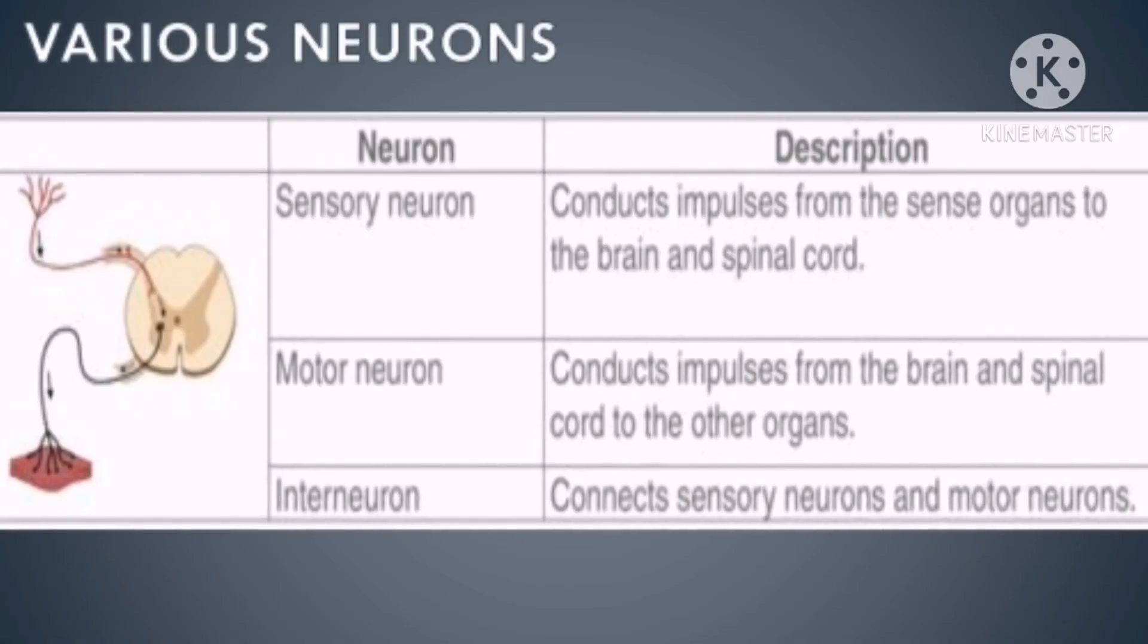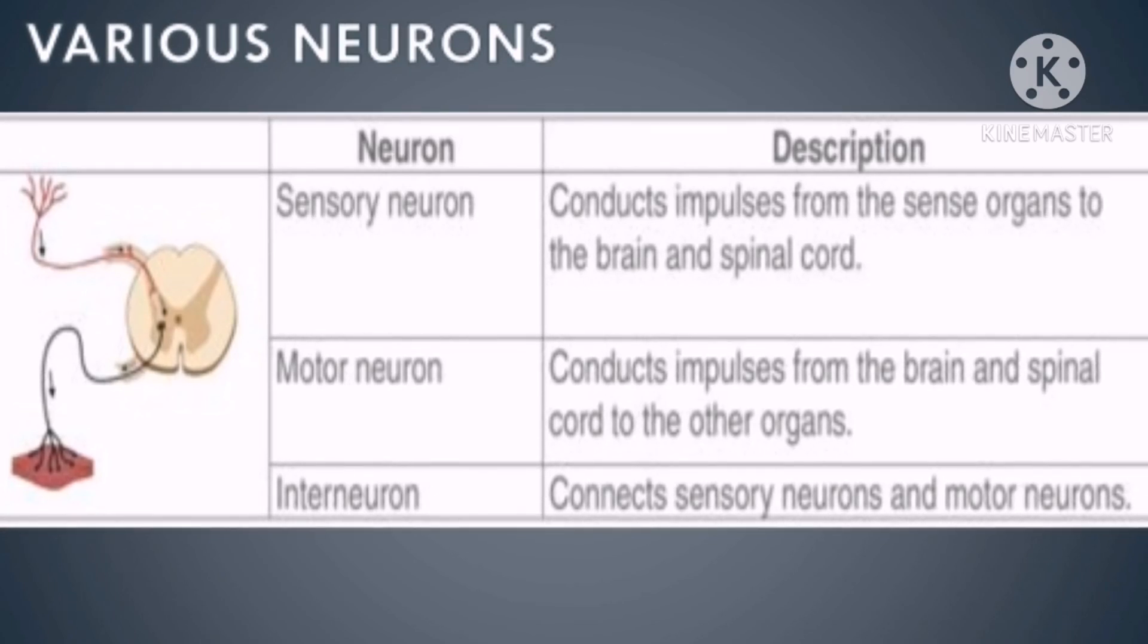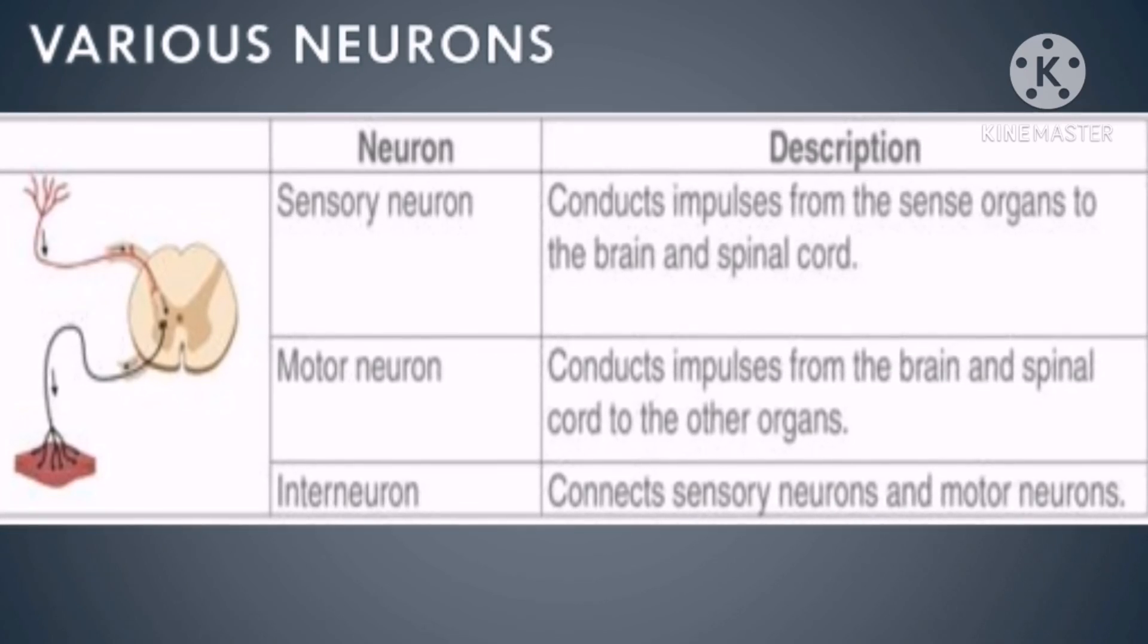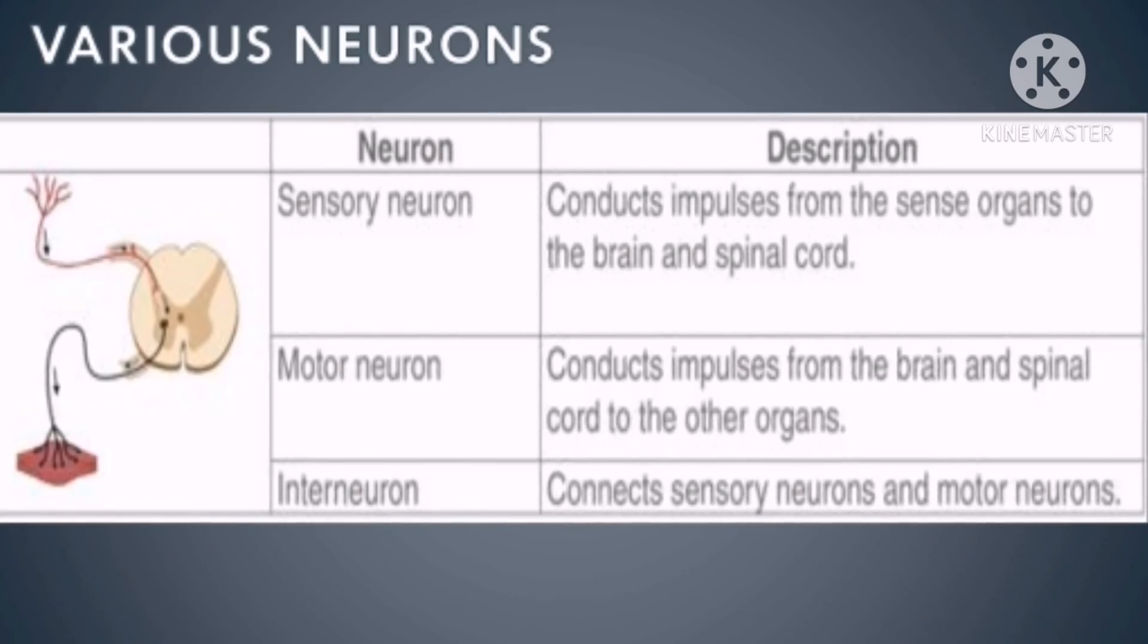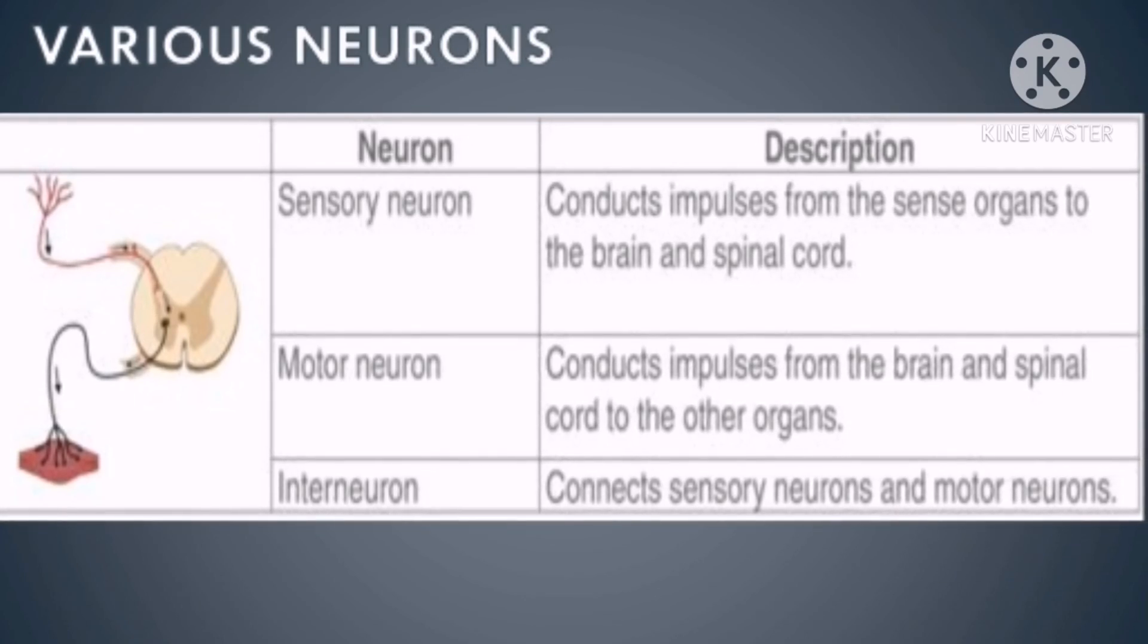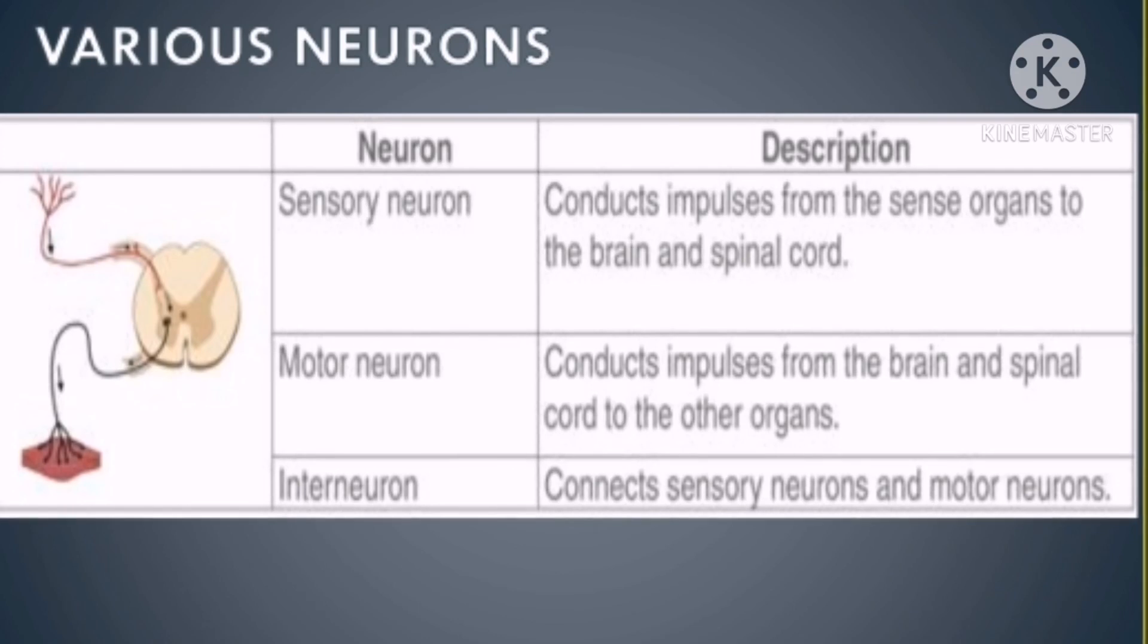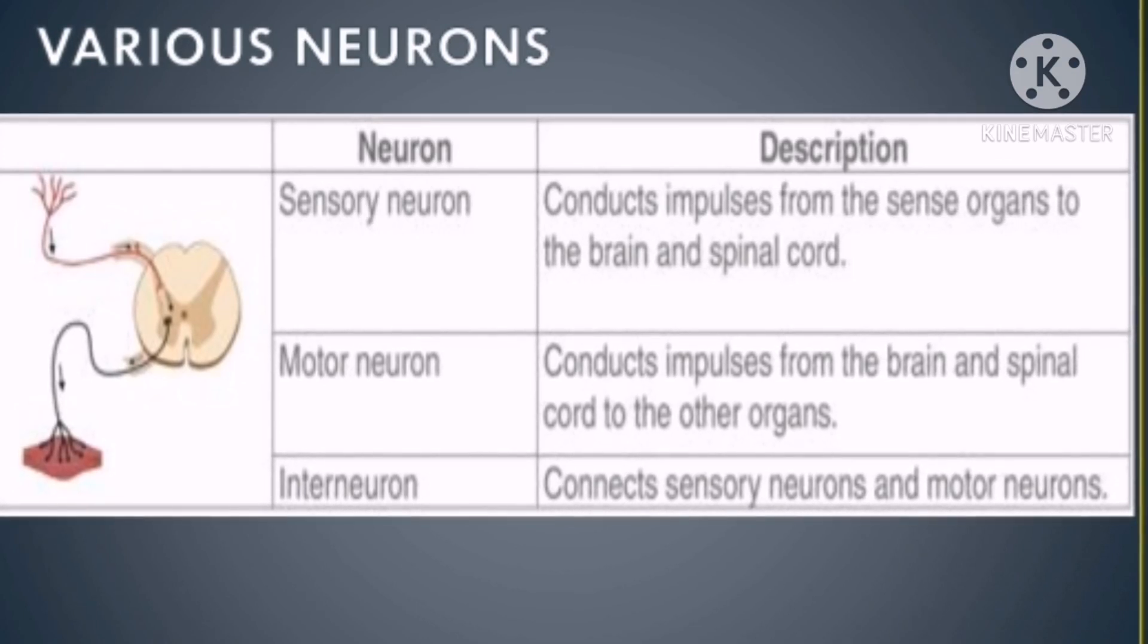Now various neurons. The top part you would see the sensory neurons, and its description would be that it conducts impulses from the sense organs to the brain and spinal cord. The next is interneuron, and that connects sensory neurons and motor neurons. And last is the motor neuron, and that conducts impulses from the brain and the spinal cord to the other organs.